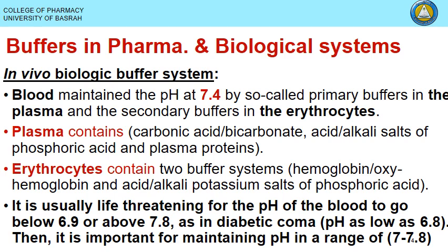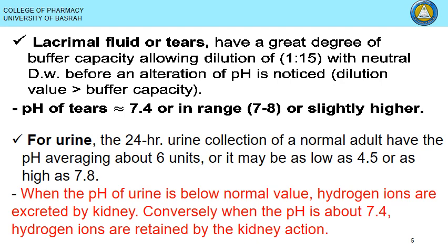Extremely low or high pH can be life-threatening. For example, in diabetic coma, excess ketone bodies cause excess acidity, dropping pH as low as 6.8. A pH below 6.8 or above 7.8 is a life-threatening condition. That is why pharmaceutical formulations for direct blood administration include a buffer system to maintain pH near 7.4, within the range of 6.9 to 7.8.